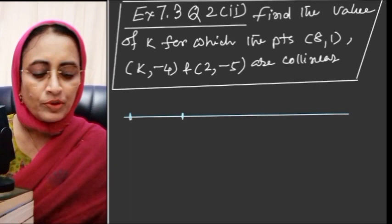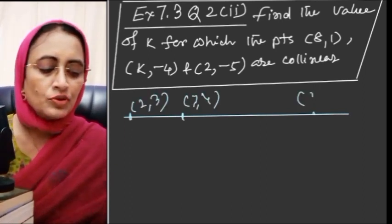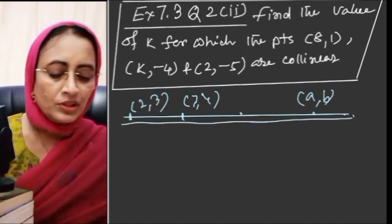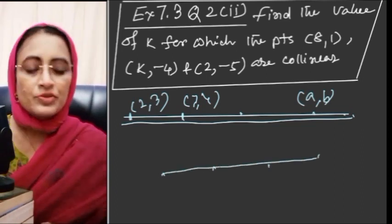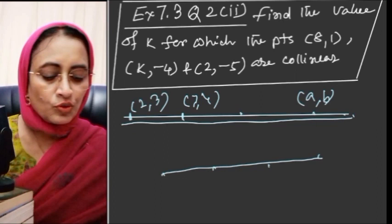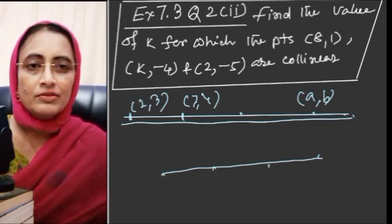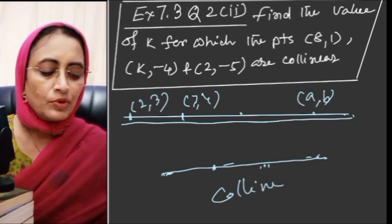If we have 2 points, 3 points, or 4 points on the same line, if all those points lie on the same line, we call them collinear. If we take three points and join them and they all lie on a single line, then these points are called collinear points.